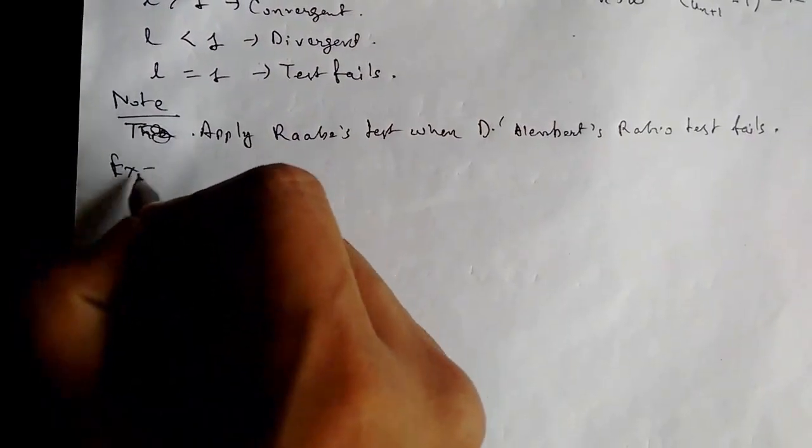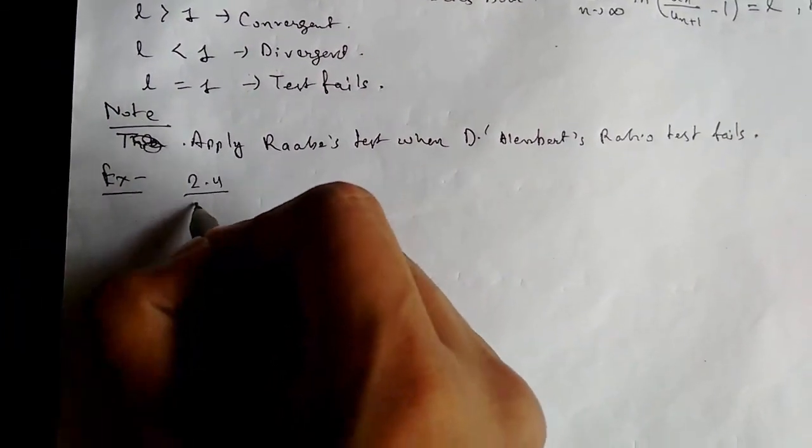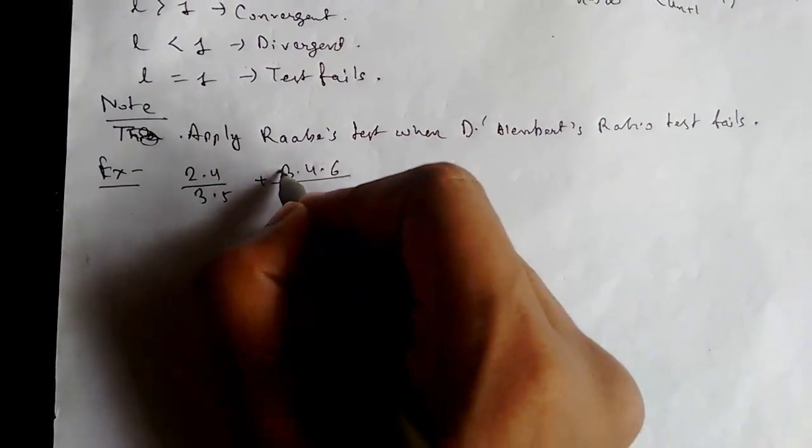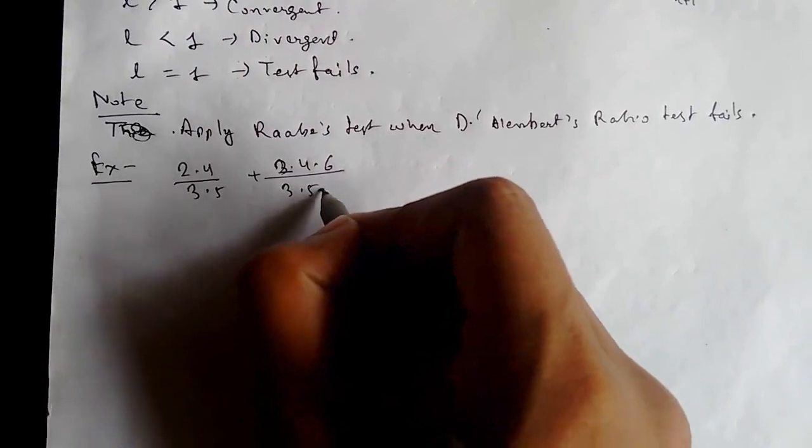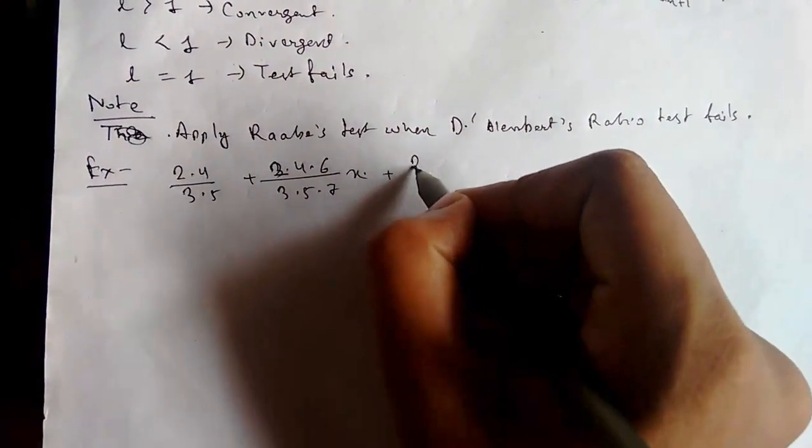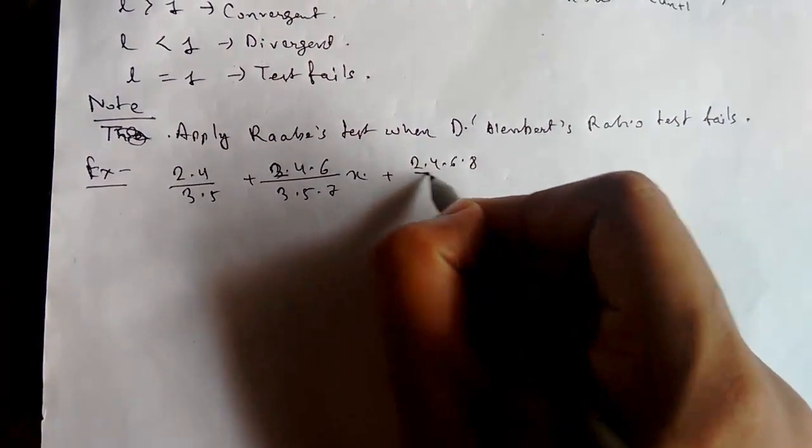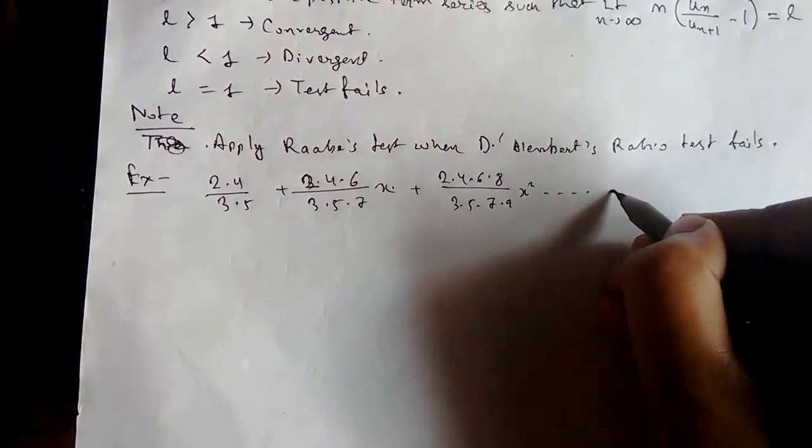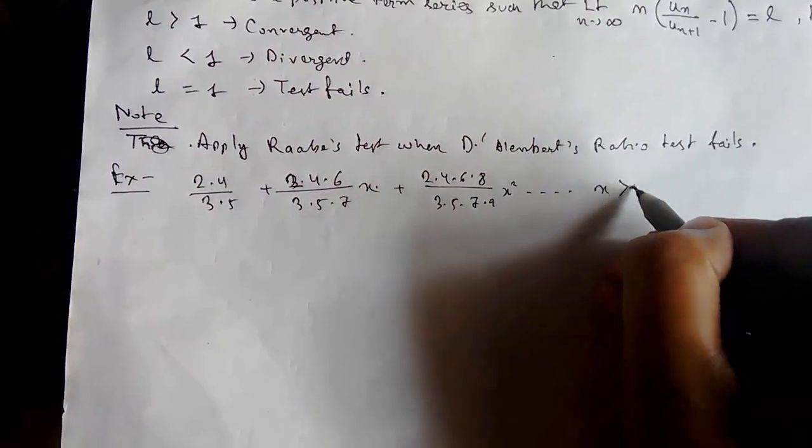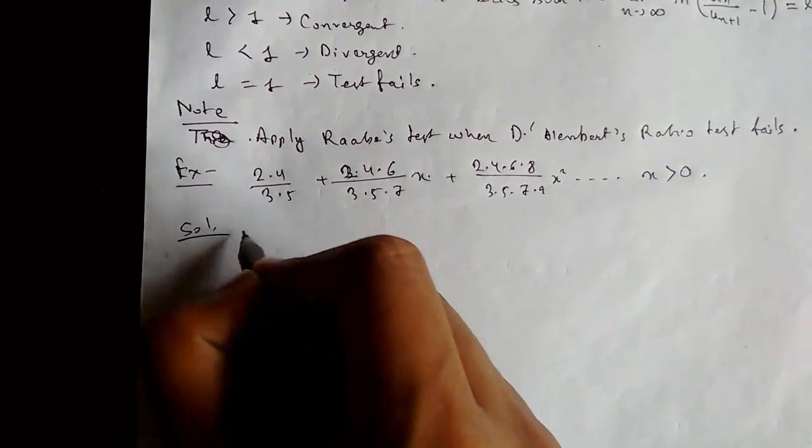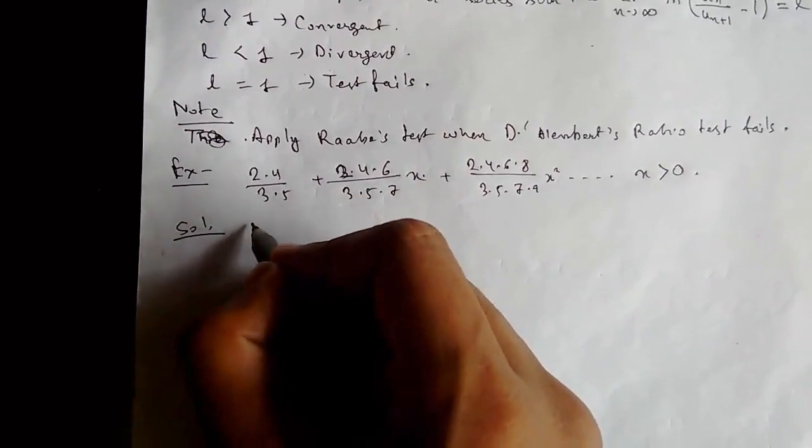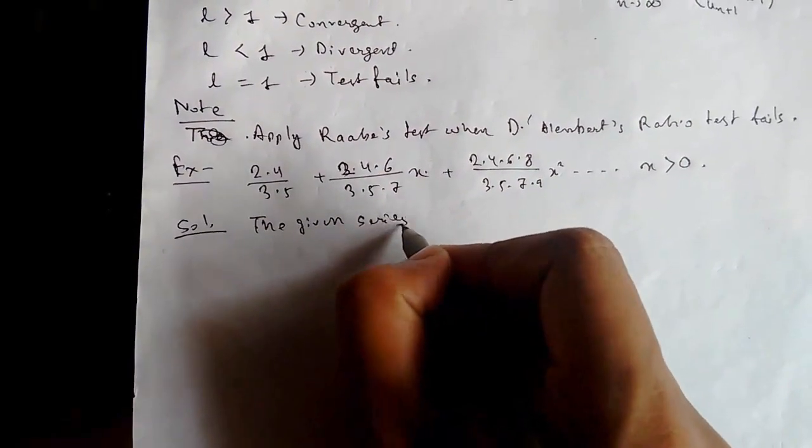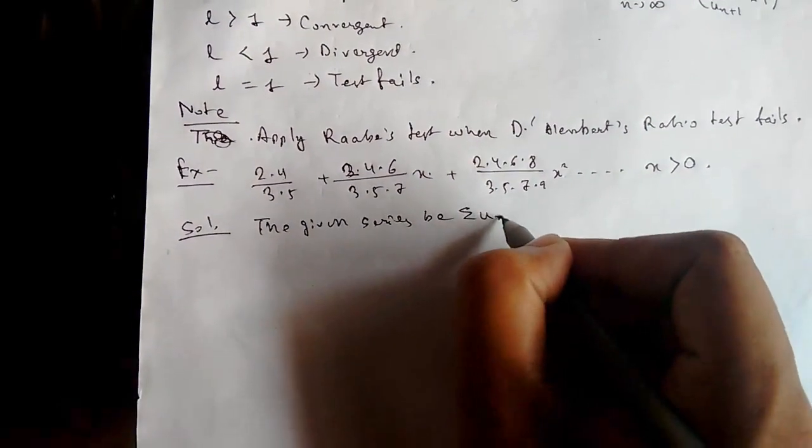So let us see an example. Suppose you have to find the convergence or divergence of this series: 2·4/(3·5) + (2·4·6)/(3·5·7)·x + (2·4·6·8)/(3·5·7·9)·x² up to infinity, for x greater than 0.